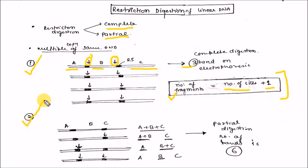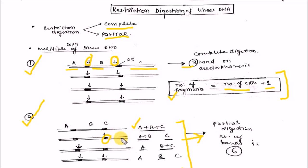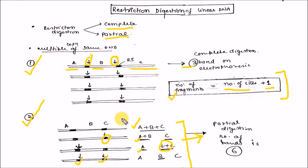In the partial digestion of linear DNA, all possibilities of cleavage are represented. If no cutting occurs, the complete DNA sequence A plus B plus C is present. If cutting occurs at site two, you get fragments A plus B and C. If cutting occurs at site one, you get fragment A and B plus C. If both sites are cut, you get fragments A, B, and C. This gives a total of six fragments generated in the partial digestion of this linear DNA example.